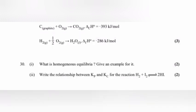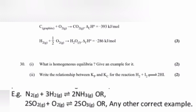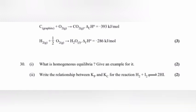Question 30, part 1: What is homogeneous equilibria? Give an example for it. Answer: An equilibrium reaction in which all the reactants and products are in the same phase is called homogeneous equilibrium. Part 2: Write the relationship between KP and KC for the reaction H2 plus I2 gives 2HI.